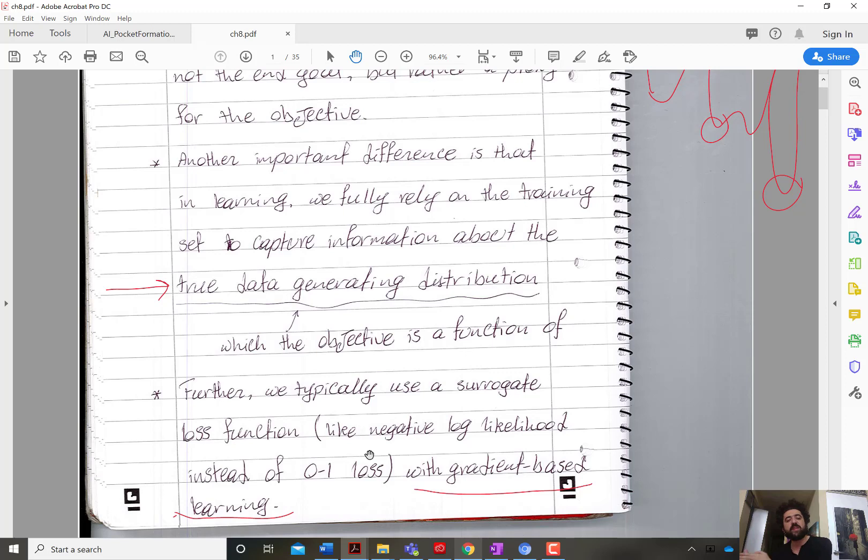And in many cases, like when we do regularization, we actually intentionally stay away from the global optimal of that training cost function, because we call that generalization. If we custom tailor the solution exactly to the training data then it will not generalize well, or at least that's the assumption, to test data that are never seen during training. So these are the major differences from a pure optimization problem. Thank you.